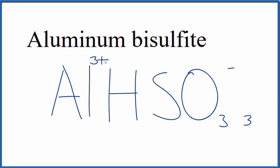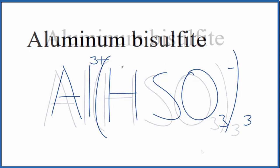We'd also need to put parentheses around the ion here to show that we have 3 of them. So this is the formula for aluminum bisulfate, this Al(HSO3)3.